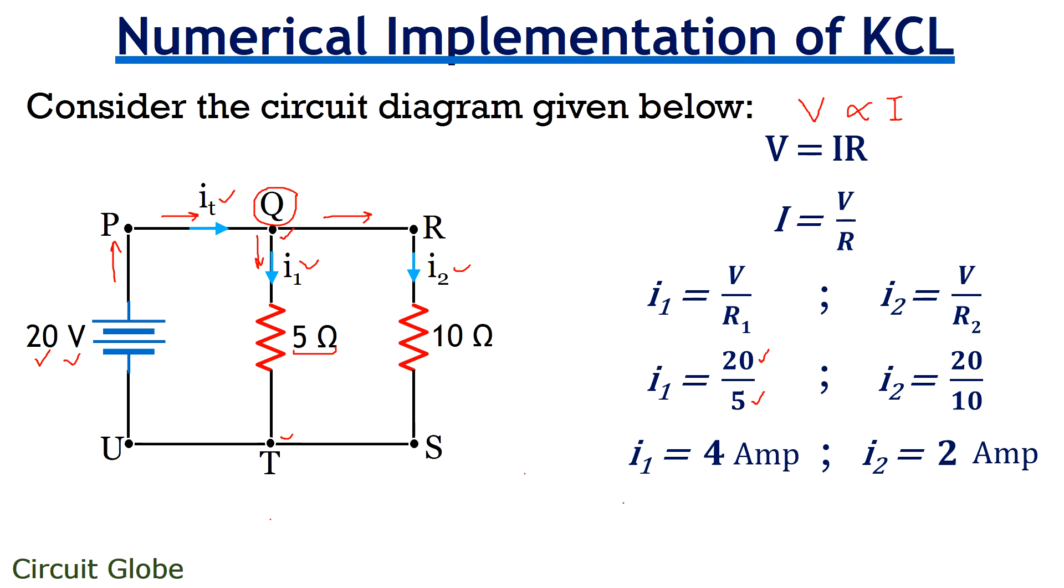Friends, according to KCL, the sum of current entering the junction that is IT must be equal to the sum of current leaving the junction. Fine. So, for this particular case, we will get the value of IT as the summation of I1 and I2. So, it will be 6 amperes as the value of I1 is 4 ampere and the value of I2 is 2 ampere.